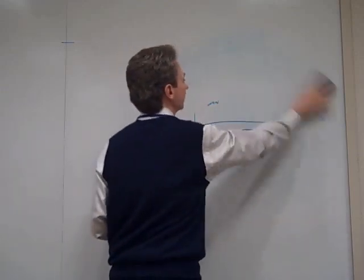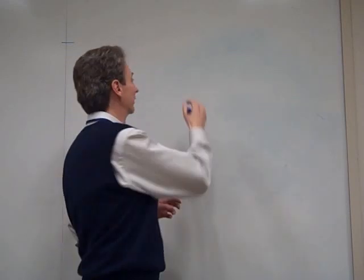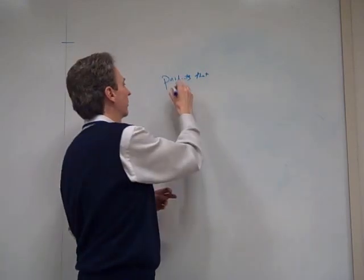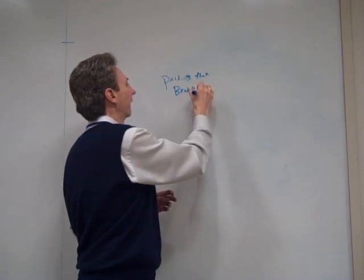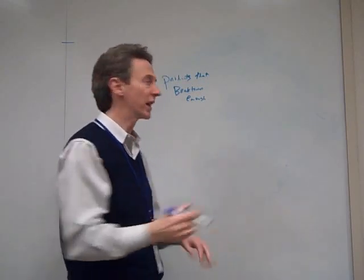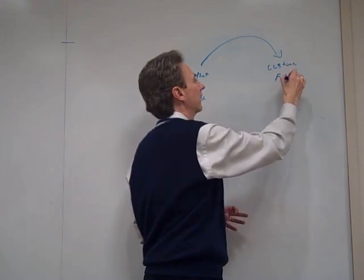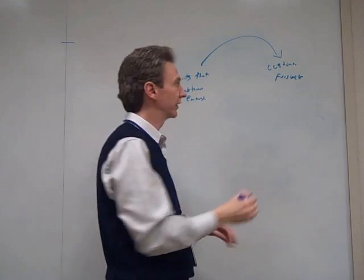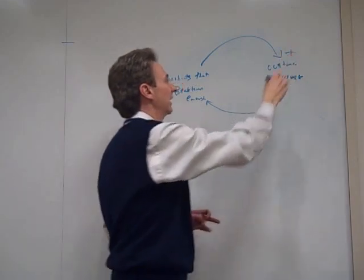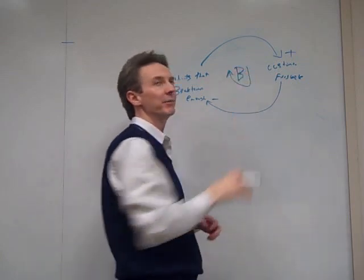Last example: you have products that aren't innovative enough — not breakthrough enough. Your problem-solving solution is to get more customer feedback. So you increase your customer feedback, and that decreases the products that aren't breakthrough enough. That's your problem-solving balancing loop.